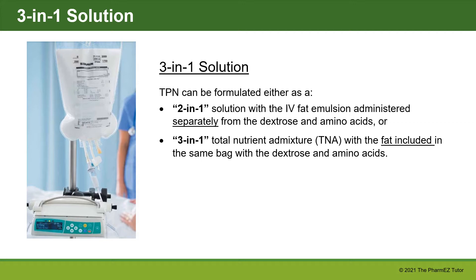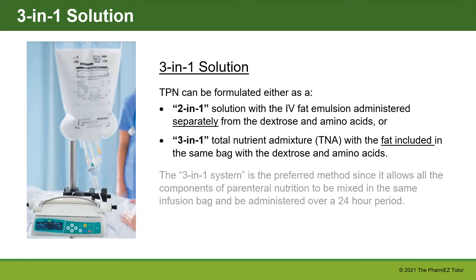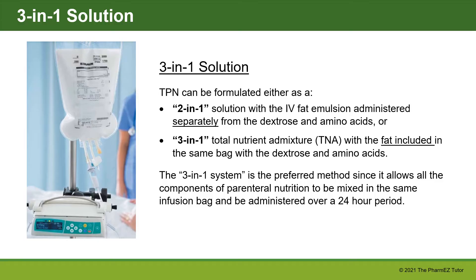TPN can be formulated either as a 2-in-1 solution with the IV fat emulsion administered separately from the dextrose and amino acids, or as a 3-in-1 total nutrient admixture with the fat included in the same bag with the dextrose and amino acids. The 3-in-1 system is the preferred method since it allows all components of parenteral nutrition to be mixed in the same infusion bag and administered over a 24-hour period. We will be formulating all of our TPNs in this lecture series using the 3-in-1 system.